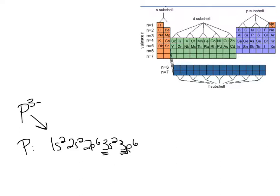And now I've taken on the same configuration as the nearest noble gas, which is argon. It now has eight valence electrons.